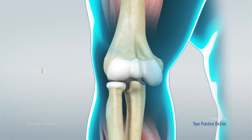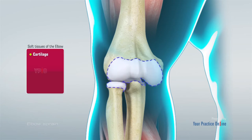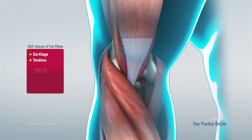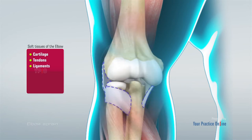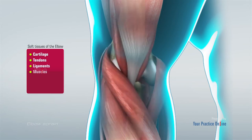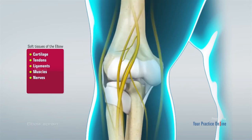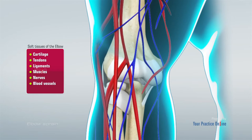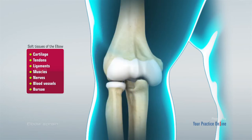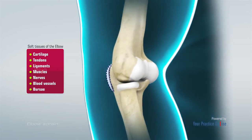The elbow is held in place with the support of various soft tissues including cartilage, tendons, ligaments, muscles, nerves, blood vessels, and bursa.